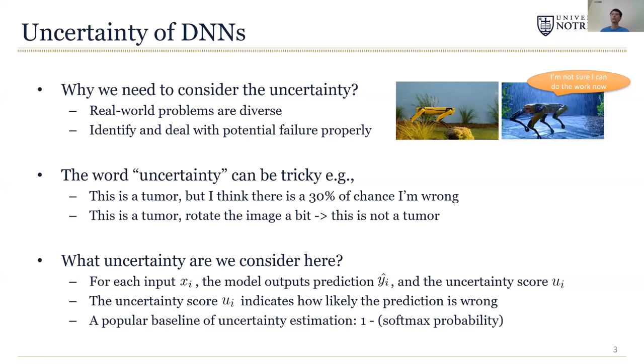In other words, if you do 1 minus uncertainty, it can be a confidence score that tells how likely the prediction is correct. In this work, we consider a popular uncertainty estimating method called the softmax probability. We directly take the probability produced by the softmax layer and use 1 minus it as uncertainty. This is a simple method but has competitive performance without any overhead.